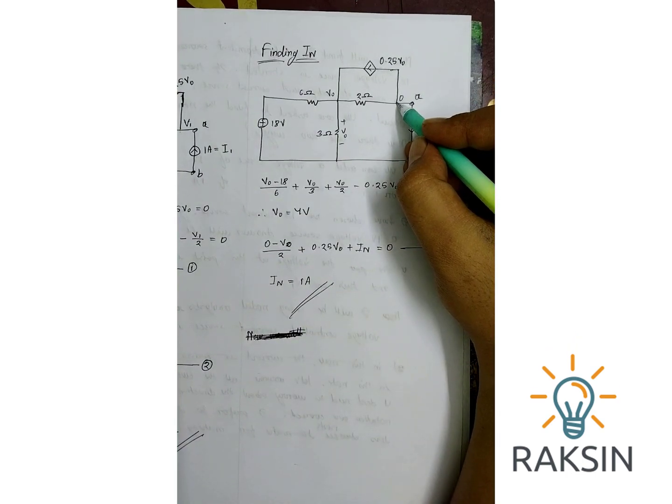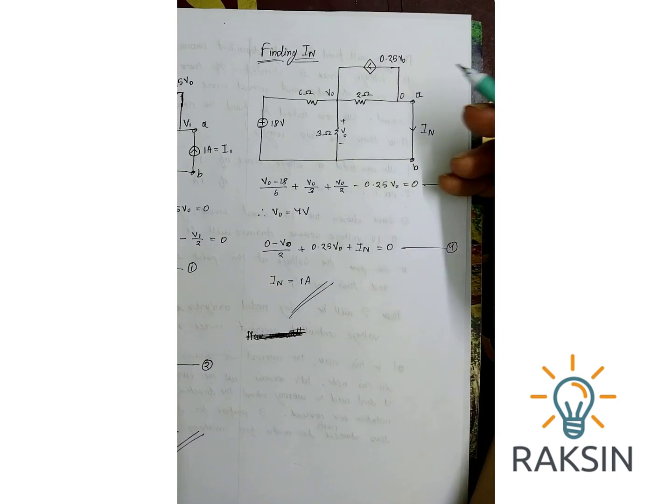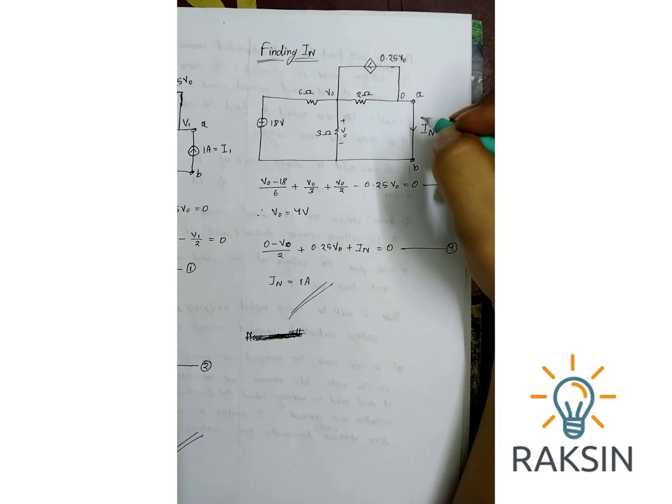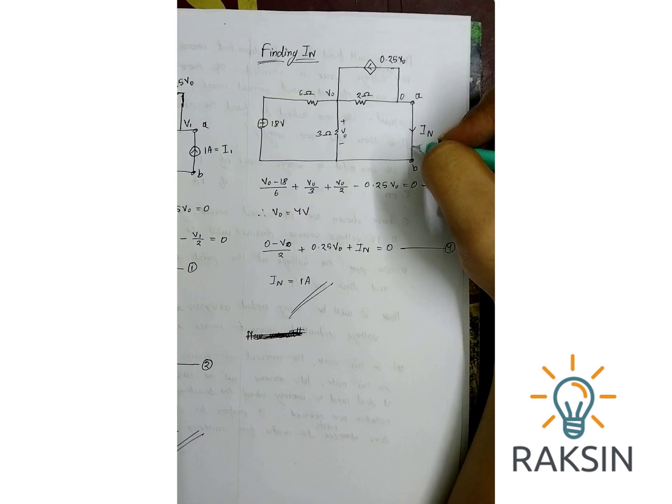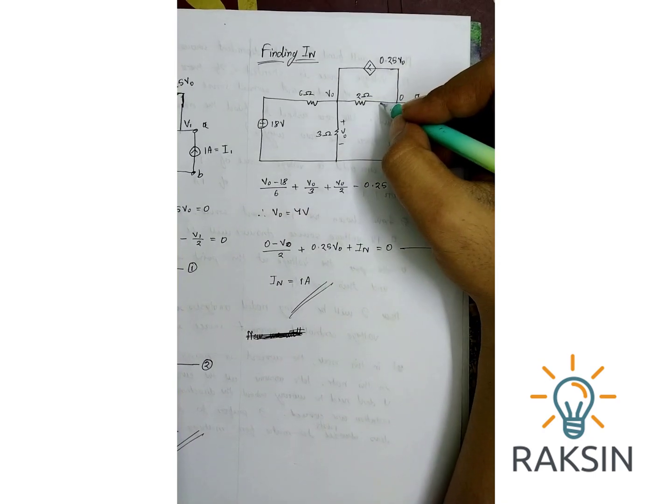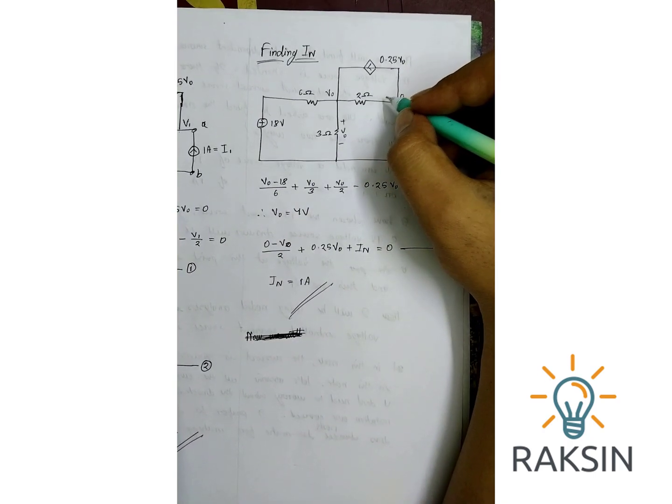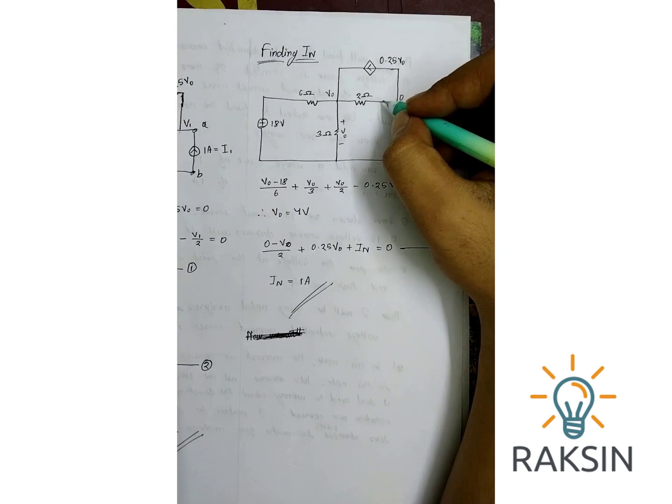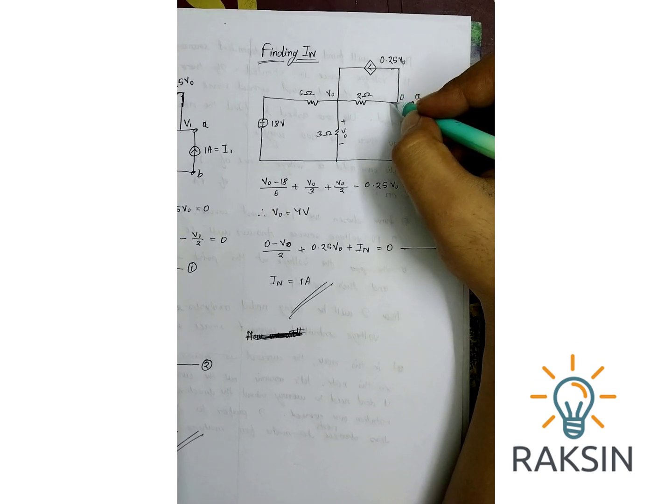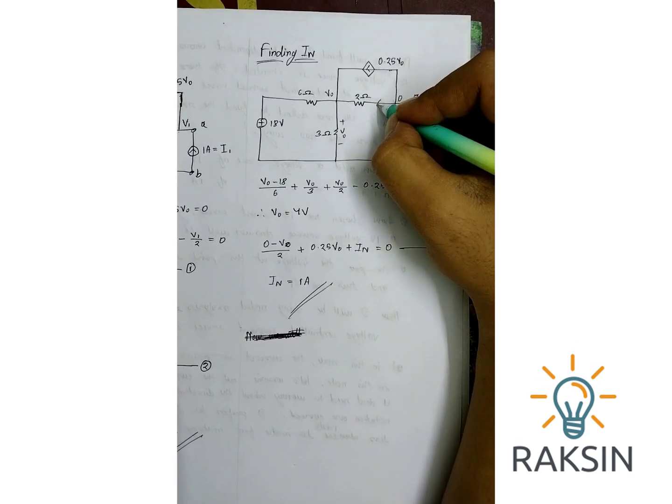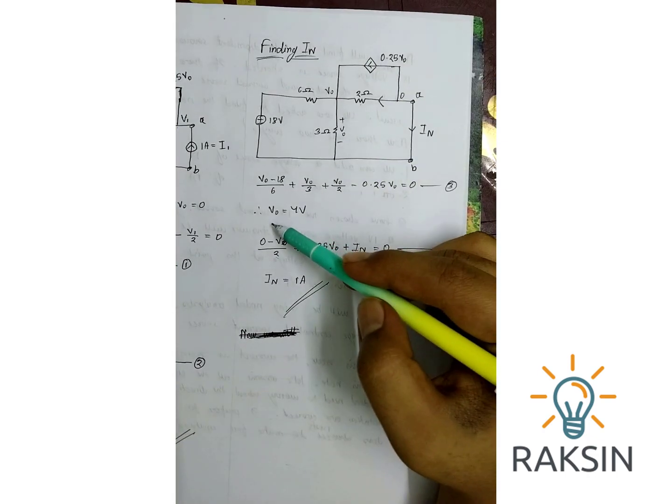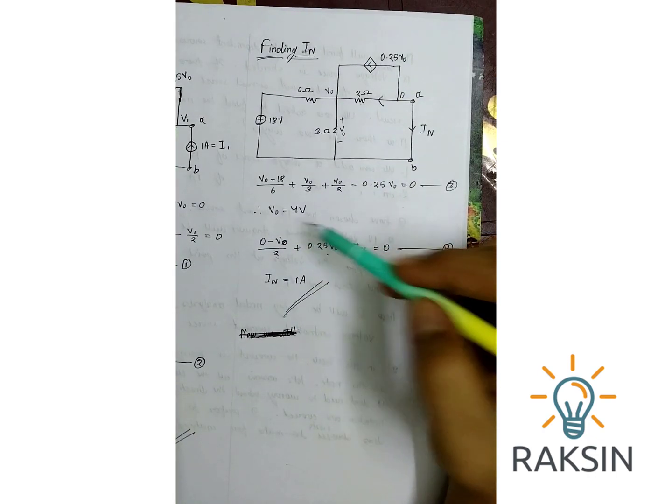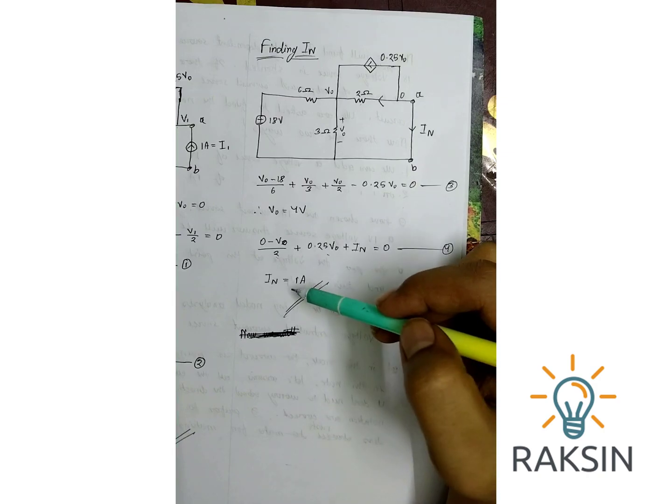Now in this node, let's take the directions of the other currents. This is IN, this is going out, this is going out. Now we know the value of V0 which is 4 volt. Let's put this value into this equation and we will get IN equal to 1 ampere.